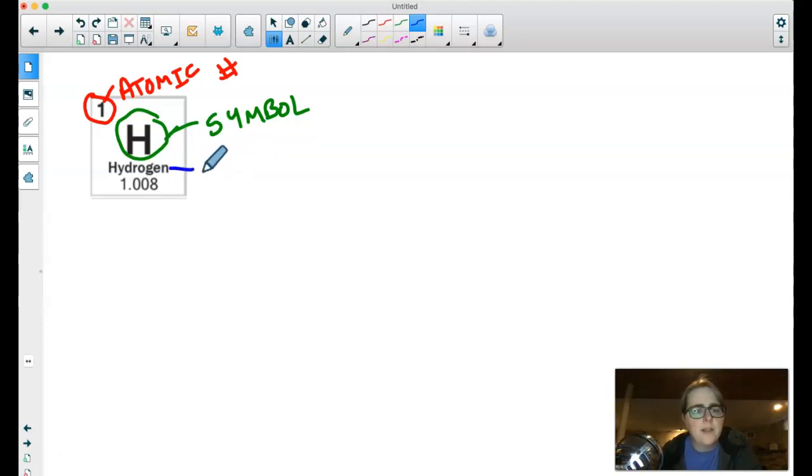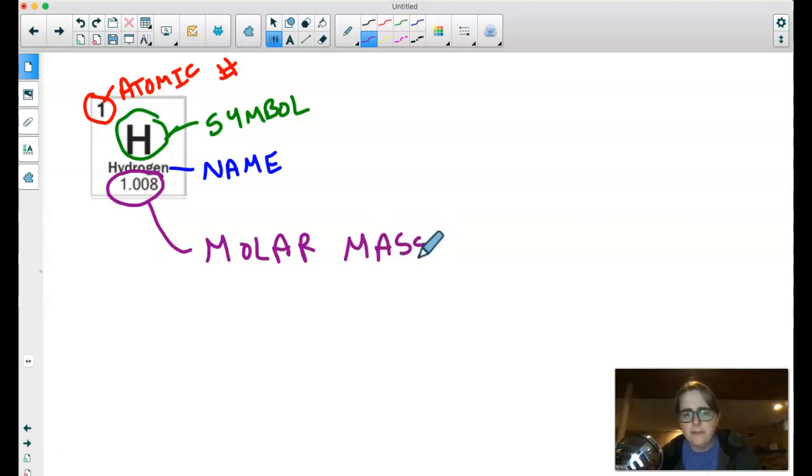And then the next thing ours lists is the name. And that's the name of the element. And then what's going to be most important right now is this number on the bottom. This is the molar mass. And so if I gathered up one mole of hydrogen atoms, so that specific number, and I put that mole of hydrogen atoms on a scale, it would read 1.008. And that unit is going to be grams. So in chemistry, we usually use the metric system. And so the molar masses that we have on the periodic table is in grams.